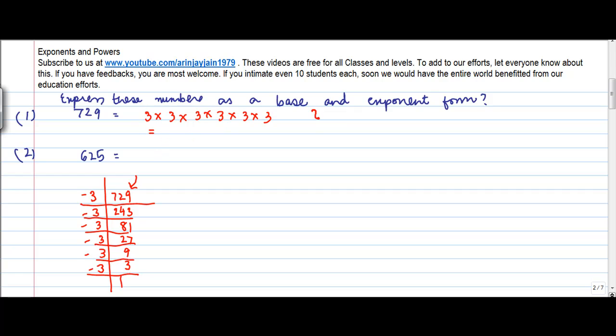Now in the previous video, you learned that any number 10 to the power 2, let's say, meant 10 into 10. So the number of times a number is multiplied by itself, is the power which comes.